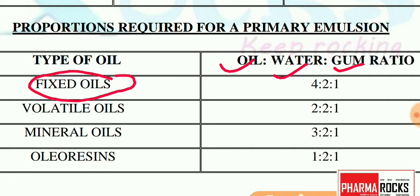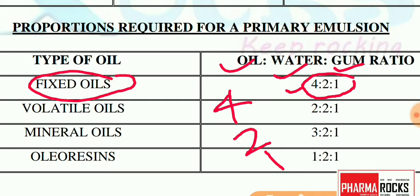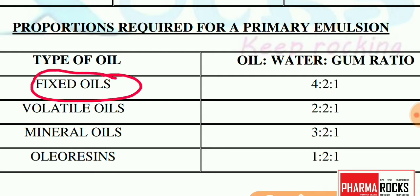Suppose we have a fixed oil — for example, castor oil. For a fixed oil, the oil:water:gum ratio is 4:2:1. That means you take four parts of oil, two parts of water, and one part of gum. Gum is mainly used as the emulsifying agent. So for fixed oil emulsions like castor oil emulsion, the oil:water:gum ratio is 4:2:1.